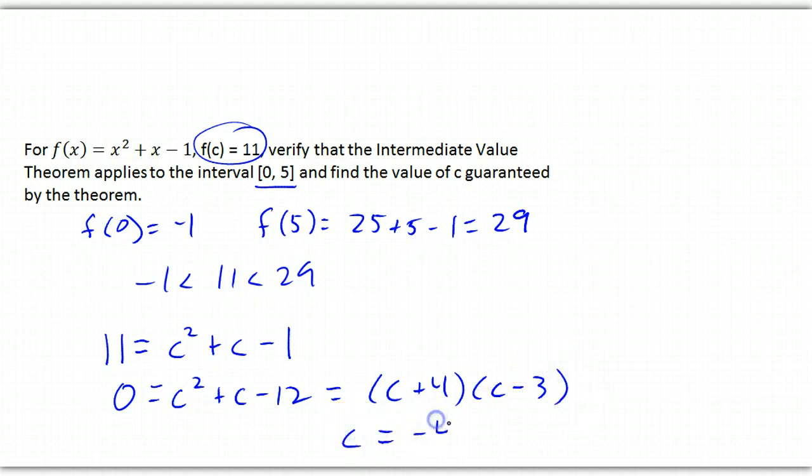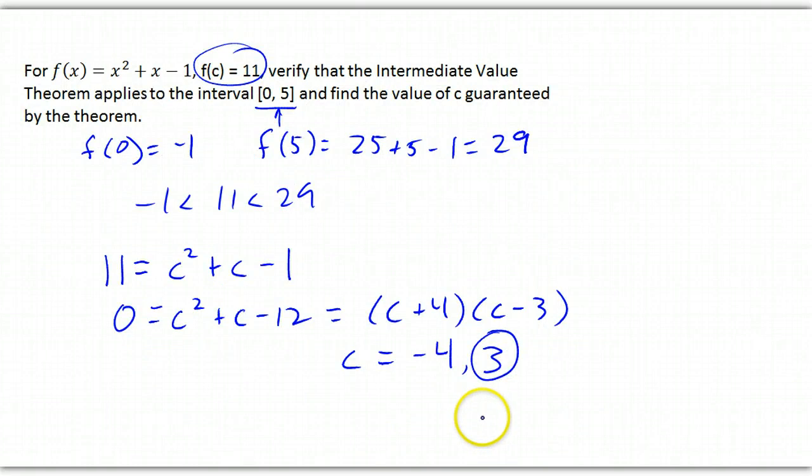So, that means we have two choices for c, negative 4 or 3. Well, c has to be between 0 and 5, so that's our answer right there. c is going to be 3. And that's how you can use the intermediate value theorem.